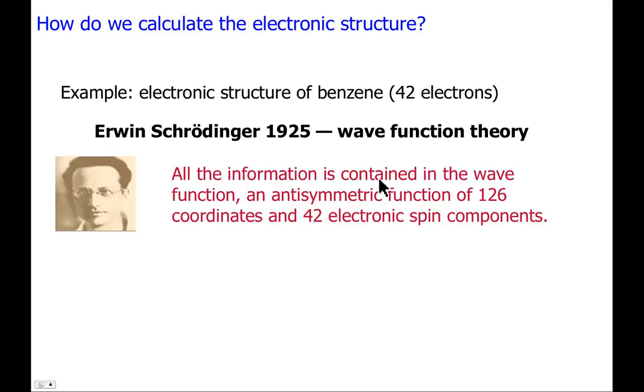Based on wave function theory, as first described by Erwin Schrödinger in 1925, all the information which is contained in the wave function can be determined from that function, which is an antisymmetric function. If we were to swap the coordinates for any two electrons, we would get a change in sign of the wave function, so that's something that has to happen with fermions. And it is 42 electrons, so if we think of the spatial coordinates of each electron, there's an x, y, and z, so there's 3. 3 times 42 is 126, so it's an antisymmetric function of 126 spatial coordinates for the electrons, and the electrons also can have spin, alpha or beta spin, and so there's 42 electronic spin coordinates as well. So that's a function of altogether 168 different coordinates, which, well, that's a lot.